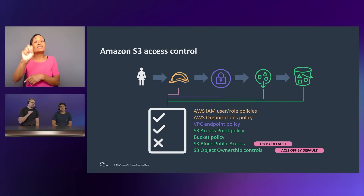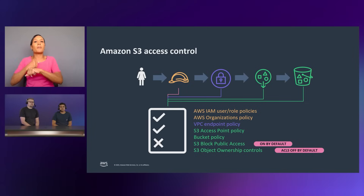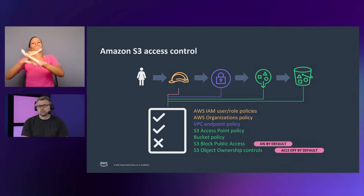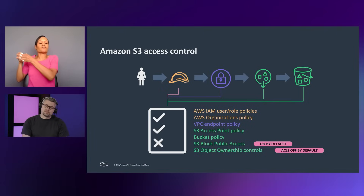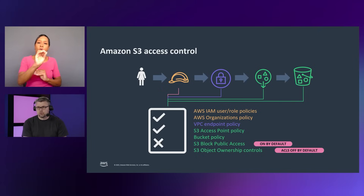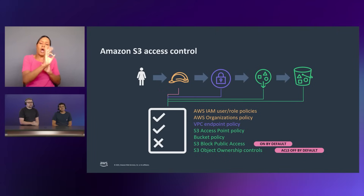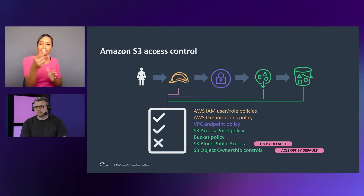S3 has additional security layers: in addition to access point and bucket policies, we support block public access. Block public access protects you from too broad a policy so you don't inadvertently grant more access than you intended. It prevents setting new bucket policies and quarantines resources if they ever become too public — and that's now on by default for all new buckets. We also changed our default behavior to turn off the access control list feature by default for all new buckets, opting you into a policy-only method of access control.